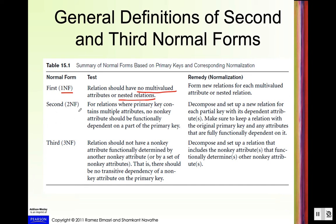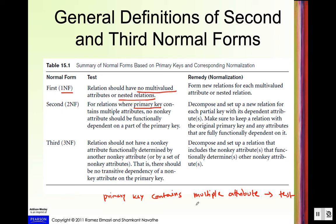For the general definition of second normal form, first we look at the primary key. If the primary key contains multiple attributes, there will be a possibility that our relational schema may violate second normal form. This is just a quick way to check — if the primary key contains only a single attribute, there is no possibility of a violation of second normal form.